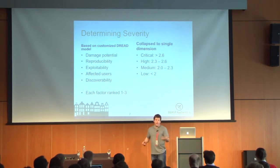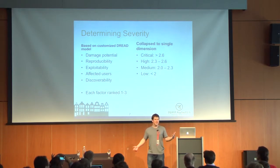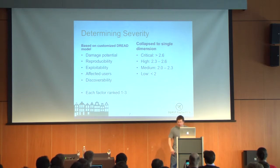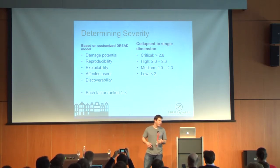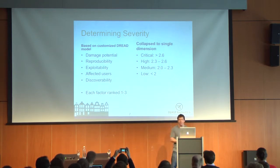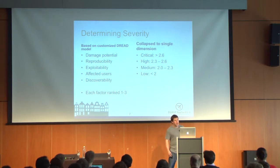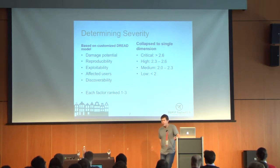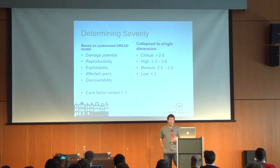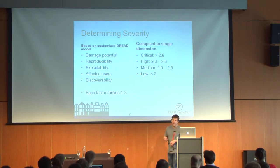From a severity standpoint, we used DREAD for this data set. The important thing is that we had a structured way of looking at this data, where you look at damage potential, reproducibility, exploitability, affected users, and discoverability. A couple of those dimensions start to matter when you look at the severity of the vulnerabilities identified — especially when you look at things like affected users. These get ranked, averaged up, and then criticals are the ones from here to here, and so on.